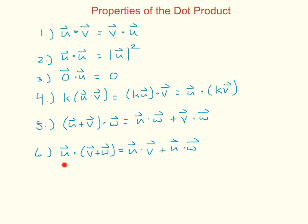And the same thing on the other side: u dot the sum of v and w is going to be u dot v plus u dot w. Please remember that these are properties of the dot product that we're going to be using to simplify some expressions.